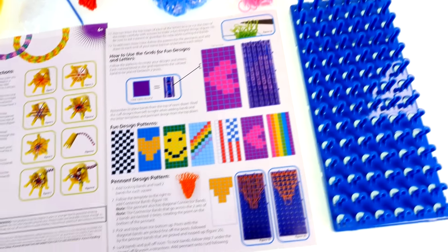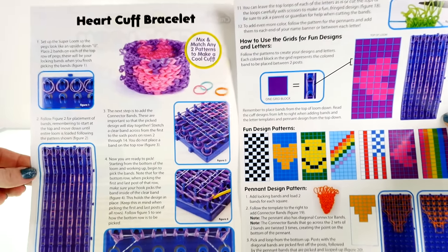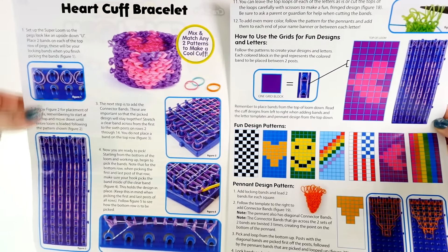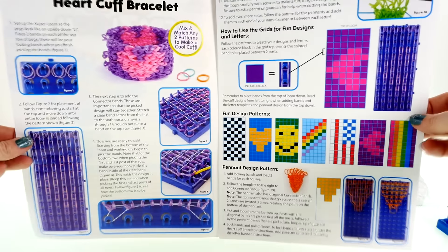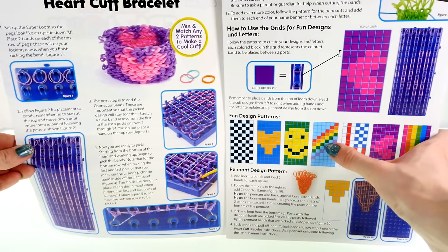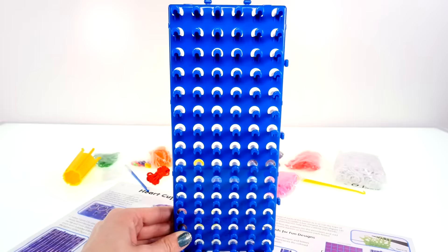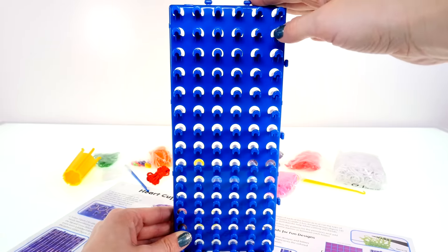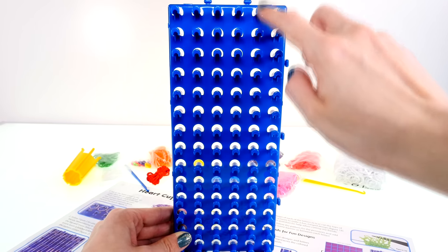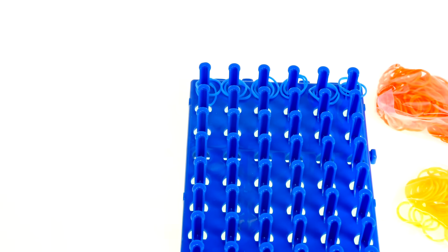Okay, so I'm gonna start off with making a cuff bracelet, but I'm going to use one of the patterns down here. I think I'm gonna use this one, it kind of reminds me of Rainbow Dash. The first step is to set up the super loom so the pegs look like an upside down V. Next I'll place two bands on each of the top row of pegs.